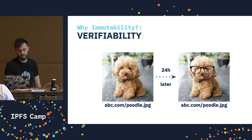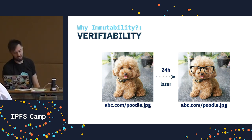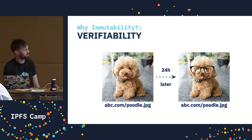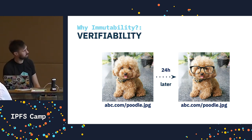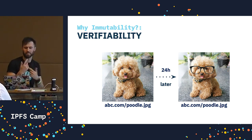In the web of today, I can put my poodle picture up at abc.com/poodle.jpg. And 24 hours later, I can doodle on my poodle — add some glasses, make him look a little bit more sophisticated. The problem is that the content isn't inherently tied to the address. The content can change, but the URL doesn't, so depending on when I access this poodle, it could be completely different.